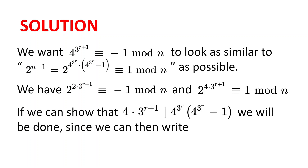Now, if we can show that 4 times 3 to the power of r plus 1 divides n minus 1 — that is, 4 to the power of 3 to the power of r times 4 to the power of 3 to the power of r minus 1 — we will be done, since we can then write 2 to the power of n minus 1 equal to 2 to the power of 4 times 3 to the power of r plus 1, to the power of n, which is congruent to 1 to the power of n, which is congruent to 1 modulo n.